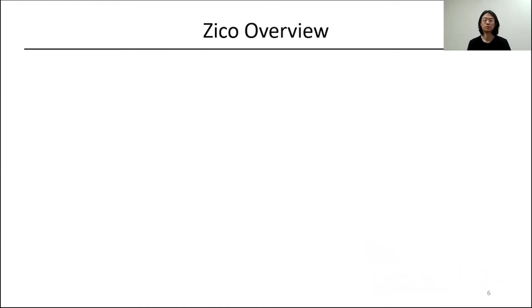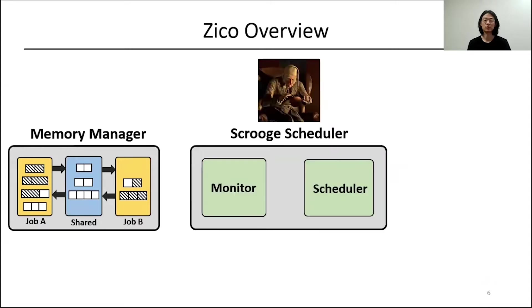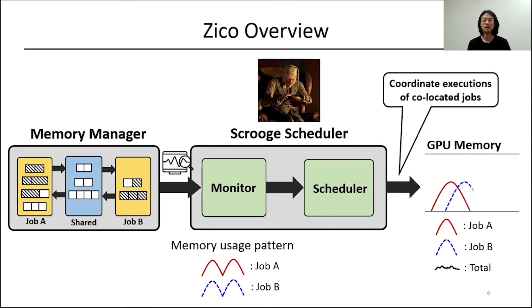Now I will show the workflow of ZICO. ZICO has two parts: one is the memory manager and the other is a scheduler named Scrooge. The memory manager facilitates dynamic memory sharing between concurrent training jobs via a shared memory pool. The Scrooge scheduler monitors memory usage patterns of respective jobs and coordinates them to properly and safely overlap the allocation phase and deallocation phase.